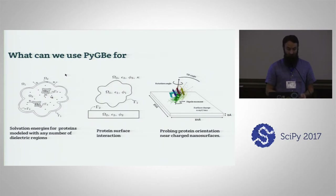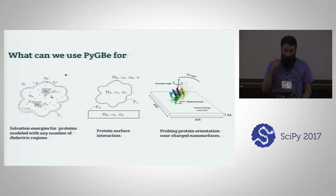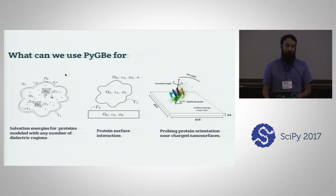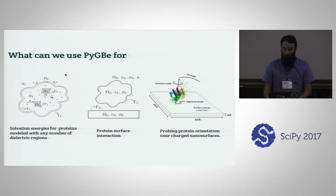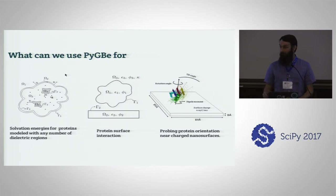So what sort of problems can PyBIE solve? It can't do protein folding, but it's very good for calculating solvation energies for proteins with any number of dielectric regions — things with cavities or different dielectric coefficients. We can handle as many regions as will fit in memory. You can use it to calculate protein surface interactions, and also probe protein orientation near charged nanosurfaces, which we think has applications for nanobiosensors, among other things.